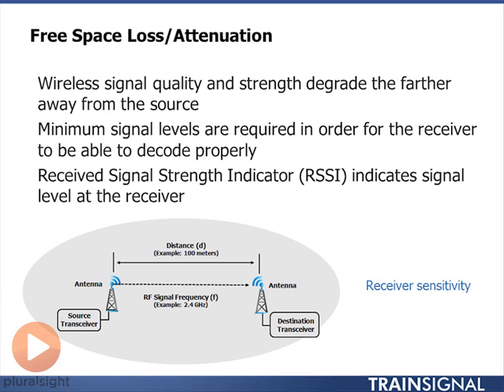What I need to do is make sure that I have enough received signal strength to successfully demodulate and decode the signal. If I'm close to the transmitter then I can use higher levels of modulation, maybe all the way up to 64 QAM, and get to higher data rates.